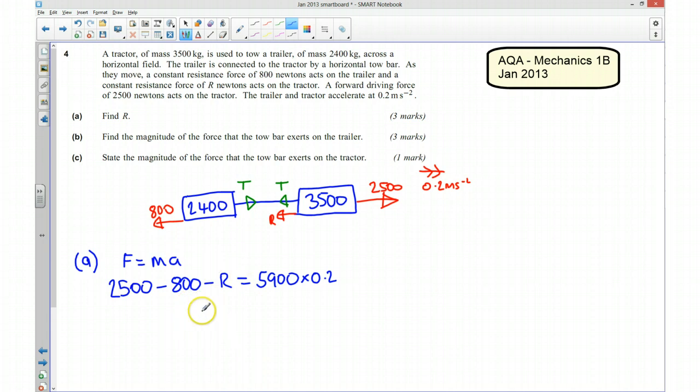If I rearrange this and tidy it up, we've got 1,700 take away R is equal to 1,180. And if I rearrange that, R is going to be 520 newtons. So we've done part A, we've found what R is.